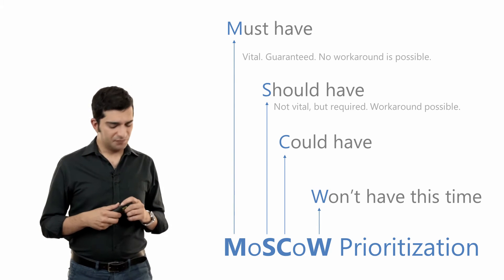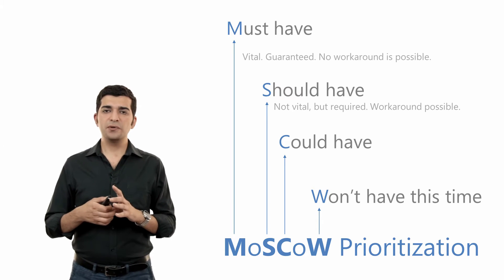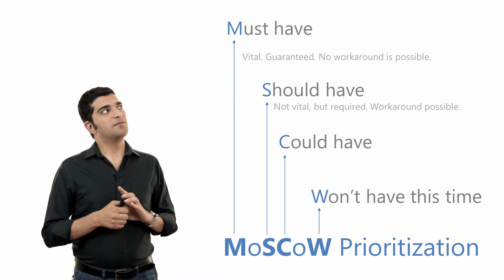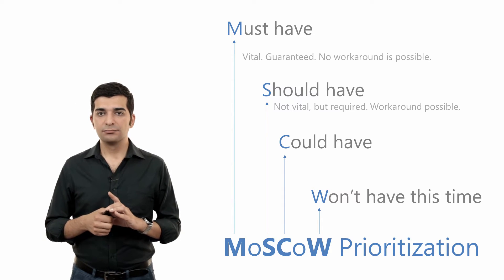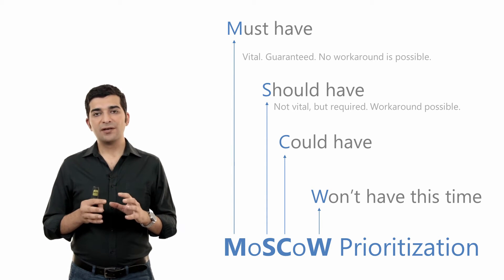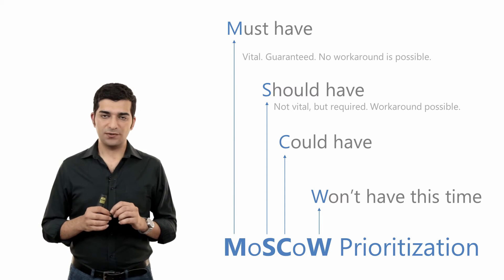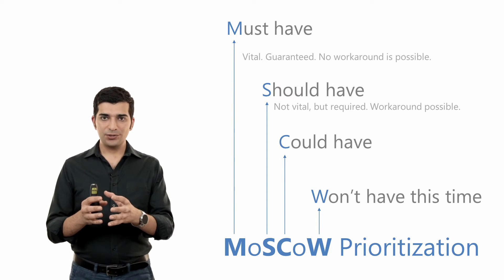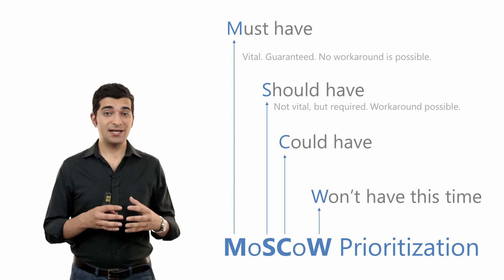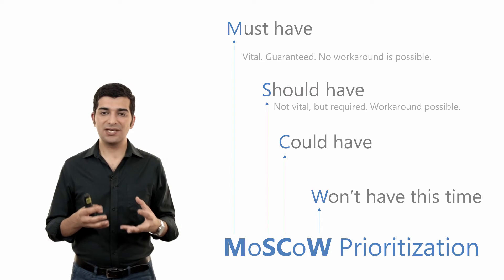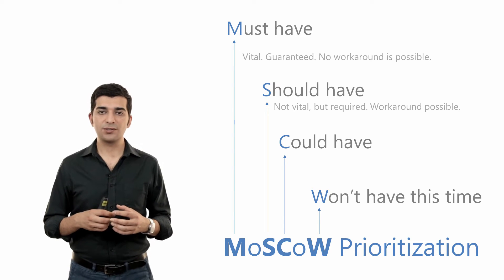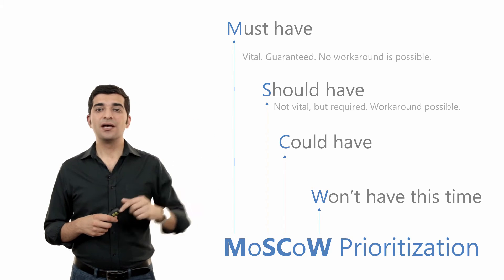For example, let's think of a word processor. How do you see the feature for editing text? It's sometimes about the nature of the software. If you really want to create a word processor and you don't have the feature to edit text, then it doesn't make sense at all — you can't even use the product as a word processor. That's why editing text is a must-have.